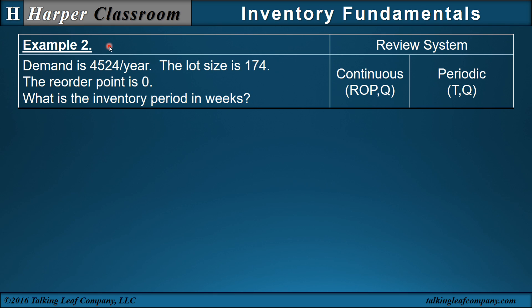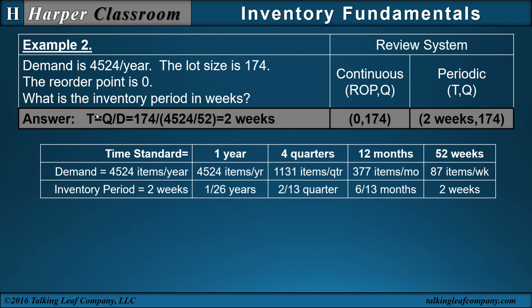Example 2: The demand is 45.24 per year, the lot size is 174, and the ROP is 0. What is the inventory period in weeks? I know my inventory period is Q over D. Since I want my inventory period in weeks, I have to transform my demand into weeks — going from years to weeks, I divide by 52. Do the arithmetic, and there's my two weeks.